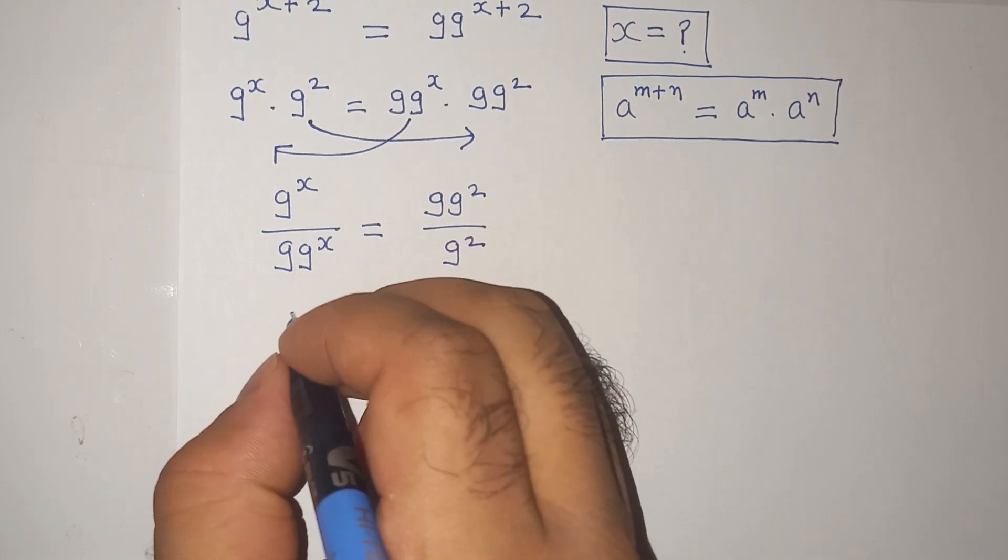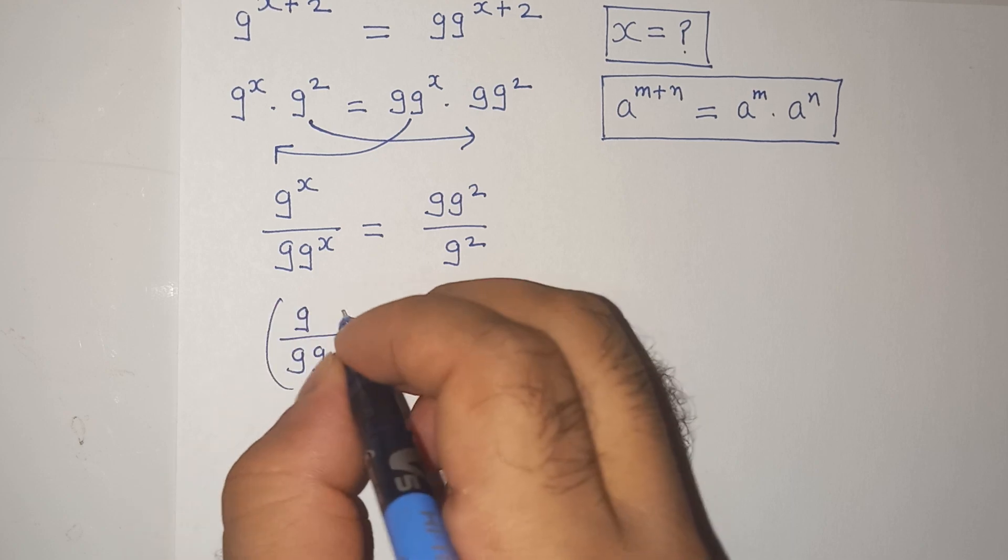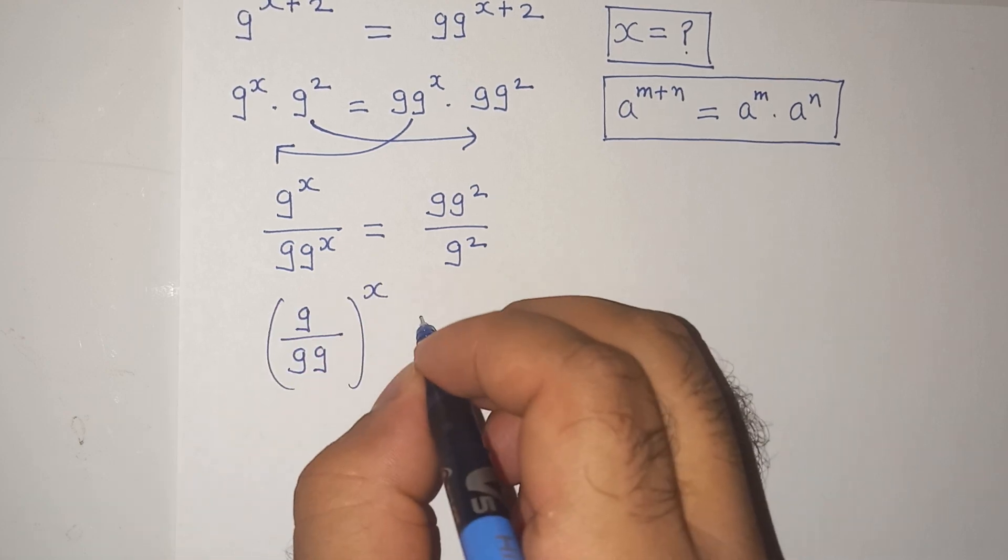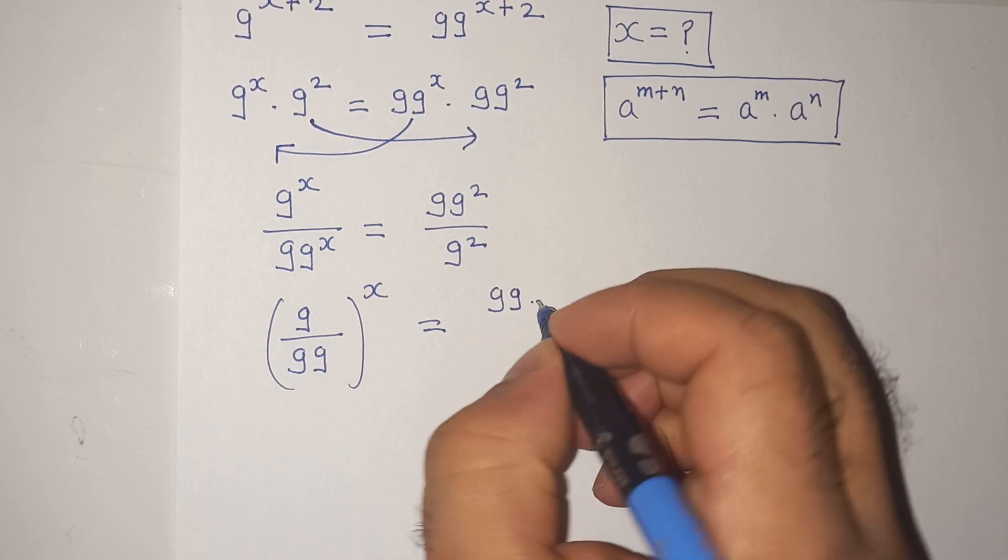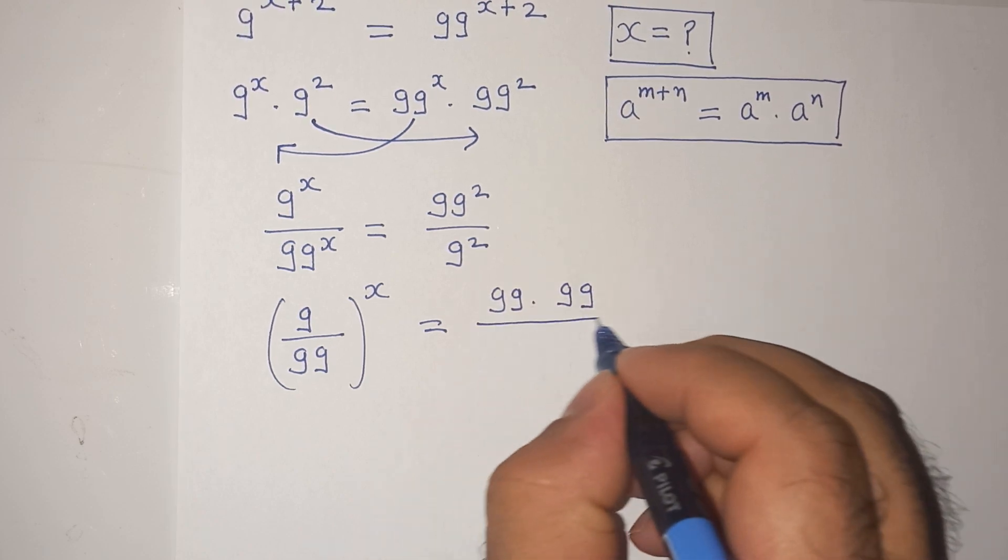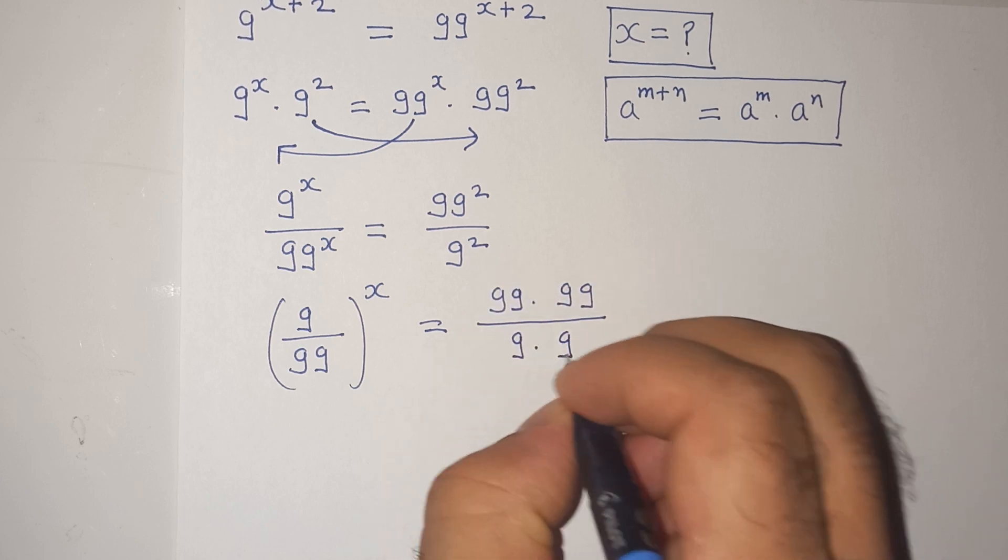Now we can further write this as 9 divided by 99 in bracket power x equals to 99 square is same as 99 multiplied 99 divided by and this 9 square is same as 9 multiplied 9.